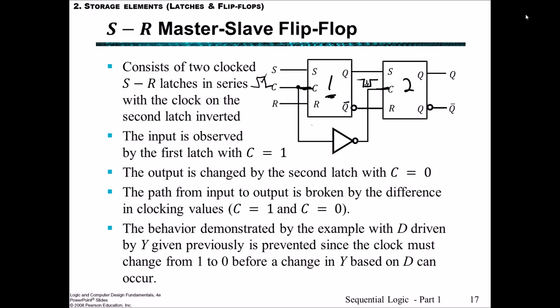In this way, the behavior where output Y feeds back into D is prevented because the clock must change from 1 to 0 before a change in Y based on D can occur. Even if there's an interconnection from Q all the way back to S, the fact that we can't get a propagation from latch one to latch two until we get a clock change from 1 to 0 shows how this SR master-slave flip-flop arrangement solves the latch timing problem.